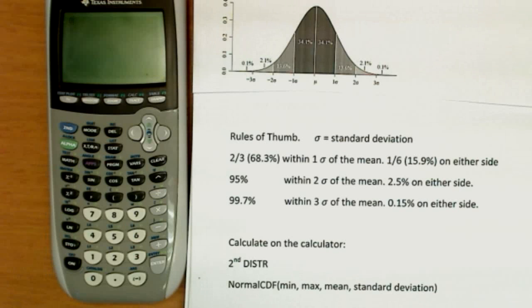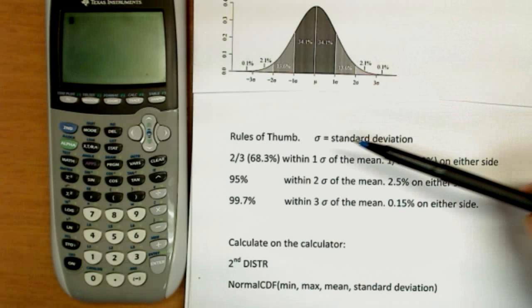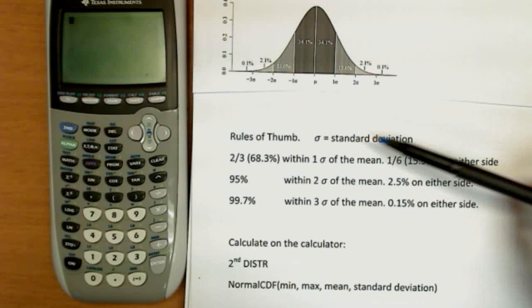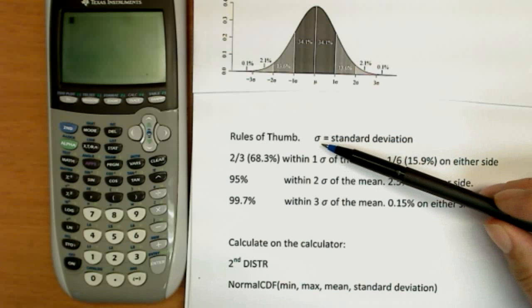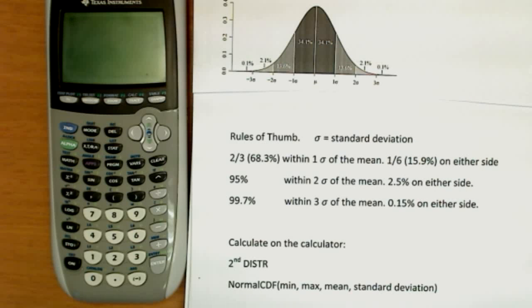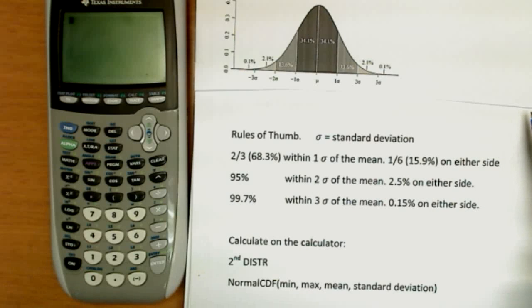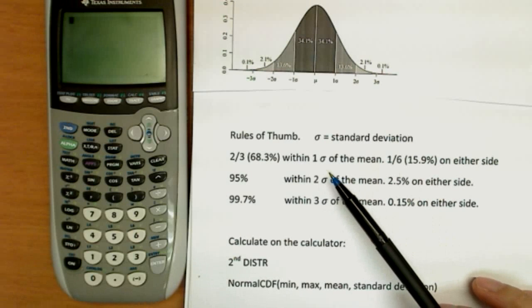Now there are two important things we're going to learn about the normal distribution. The first falls under a heading I'm going to call rules of thumb. And I'm going to use sigma as my standard deviation, because that's common in statistics. So let little sigma be the standard deviation, the Greek letter sigma. The rules of thumb are the following. Two-thirds of a population are within one sigma of the mean, or rather one sigma of the average.